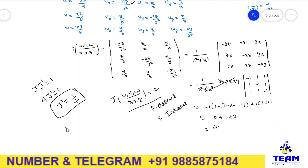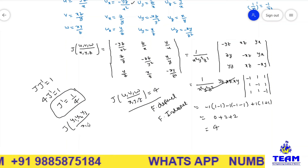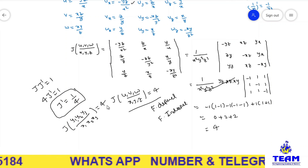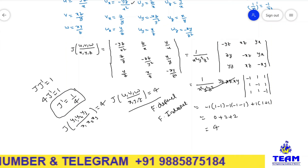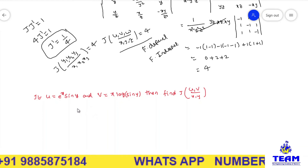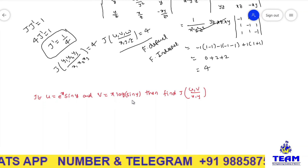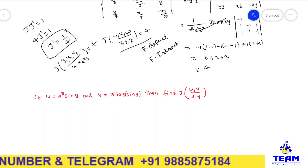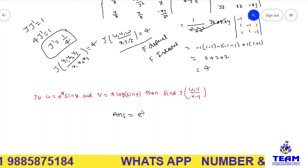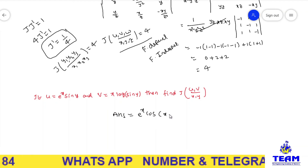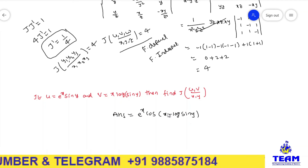The Jacobian of y1, y2, y3 with respect to x1, x2, x3 is also 4. Here is a practice problem: if u = e^x · sin(y) and v = x · log(sin(y)), then find the Jacobian of u, v with respect to x, y. The answer is: Jacobian = e^x · (cos x − log(sin y)). Please try to solve and respond in the comment box. Thank you for watching.